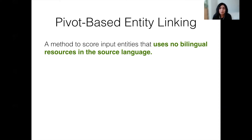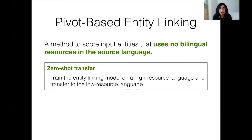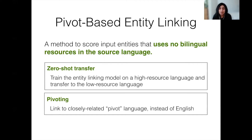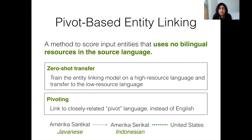This method has two main features which I'll briefly describe here. First, we do zero-shot transfer where we train the model on a high-resource language and then transfer the model to the low-resource language without any fine-tuning. Next, we present pivoting where instead of linking the entities to English, we link them to a closely related high-resource language, with the motivation that closely related languages may have similar surface forms of the entity, like this example we see here between Javanese and Indonesian.